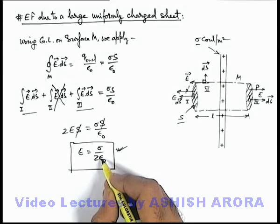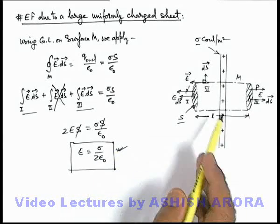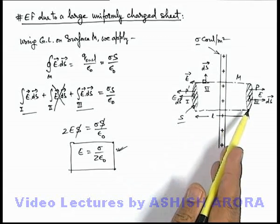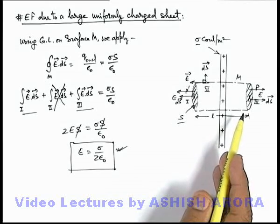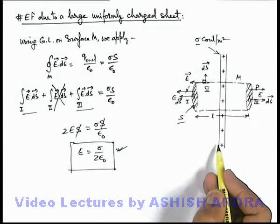Which we also calculated by the integral of elemental electric field due to a point charge. And here you can see the electric field remains uniform everywhere in the surrounding if the charge is uniformly distributed on the sheet as surface charge density sigma.